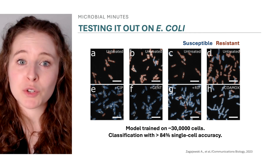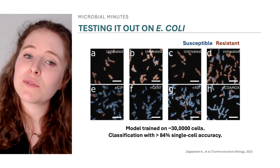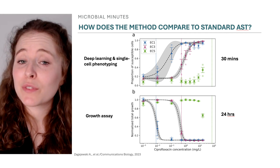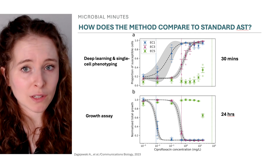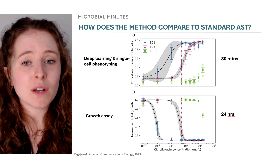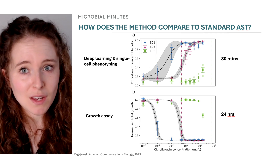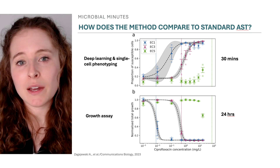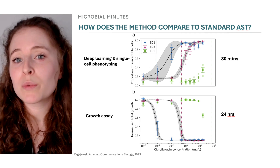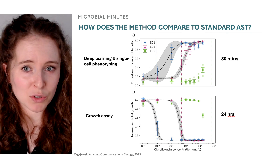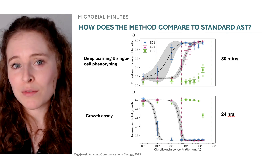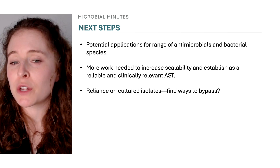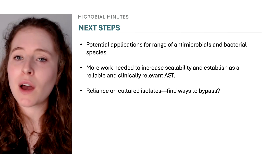Across all conditions, the deep learning pipeline, trained on images with nearly 30,000 individual cells, could classify cells as susceptible or resistant with over 84% single-cell accuracy. The system performed well for E. coli clinical isolates too, and reflected classifications defined by MICs used in clinical microbiology labs. When isolates with varying MICs for ciprofloxacin were incubated with different concentrations of the drug for 30 minutes, the results were consistent with a 24-hour growth curve assay. At concentrations below the MIC, shown here with the dashed lines, when cell growth was uninhibited, the platform identified more resistant than susceptible cells. Near and above the MIC, when growth dropped off, the ratio of susceptible to resistant cells increased. The researchers highlight that their system provided equivalent information in 30 minutes to gold-standard bacterial growth assays with high accuracy at the single-cell level.